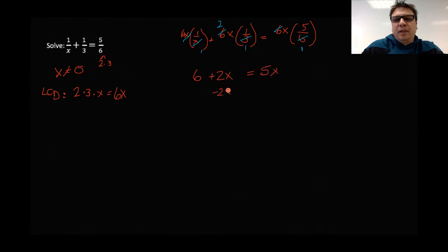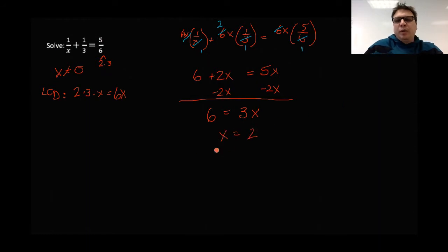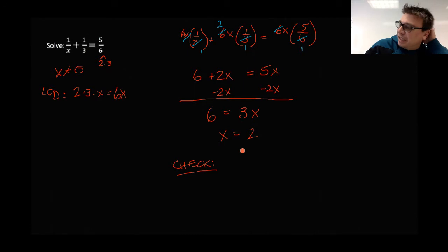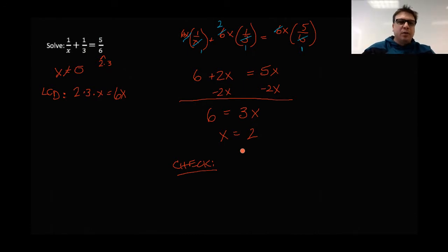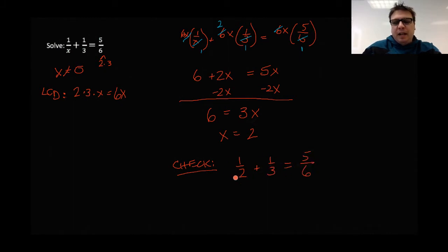Now let's simplify. Looking at what we have left: I just have the six in the first one, then plus two x, and then five x. Subtract two x from both sides, and I end up with six is equal to three x, so x is therefore equal to two. We always want to check — we're going to check every single one to make sure it works, because there are going to be things known as extraneous solutions: solutions that come out but when substituted back in, they don't work.